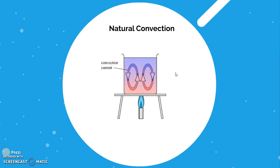There are two types of convection heat transfer. In the water heating example, the movement of molecules is driven by density variations — buoyancy effects create the convection current naturally, without any external agency. The molecules move freely based solely on density differences. This type of convection is known as natural convection.